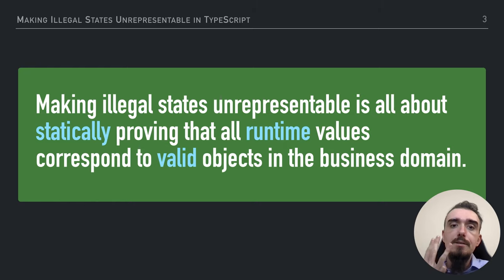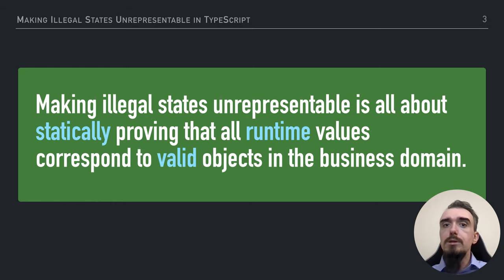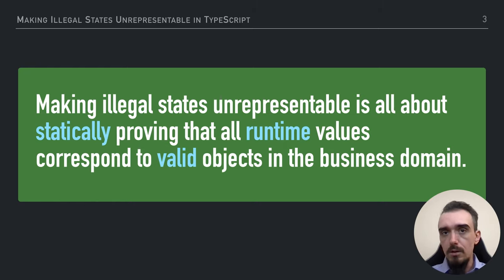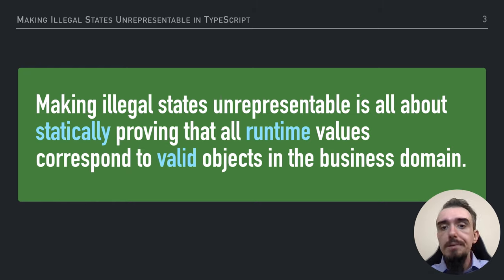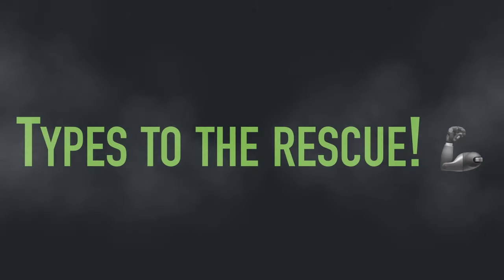I've highlighted three keywords here. The first one is 'statically', which means we will use the compiler to enforce this strictness. The second one is 'runtime', which means we don't want to just play with types — we need to prove things about our runtime values. And the third one is 'valid', which means we need to ensure that all business logic and business properties hold. So, you've guessed it — the answer is types to the rescue.